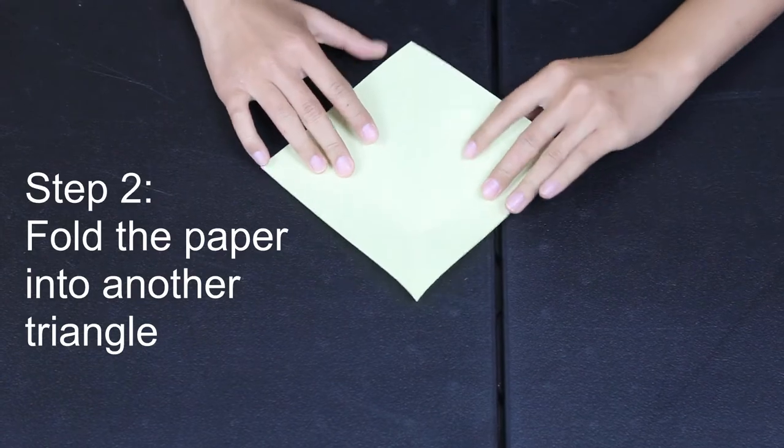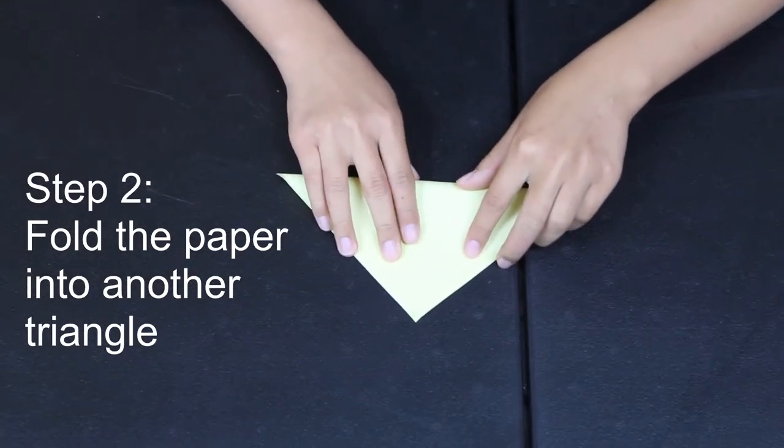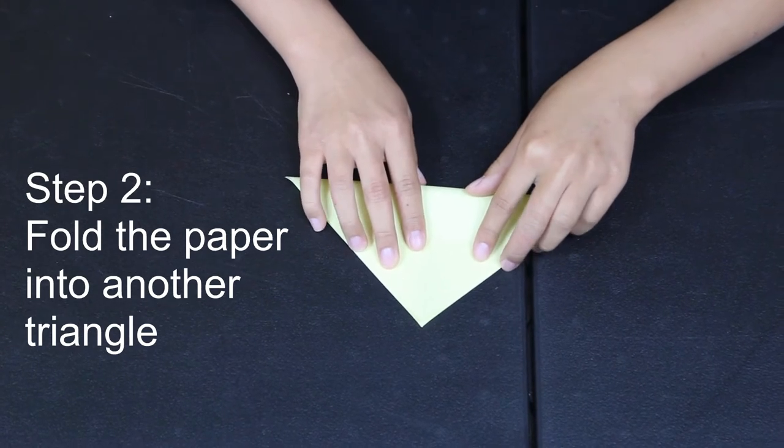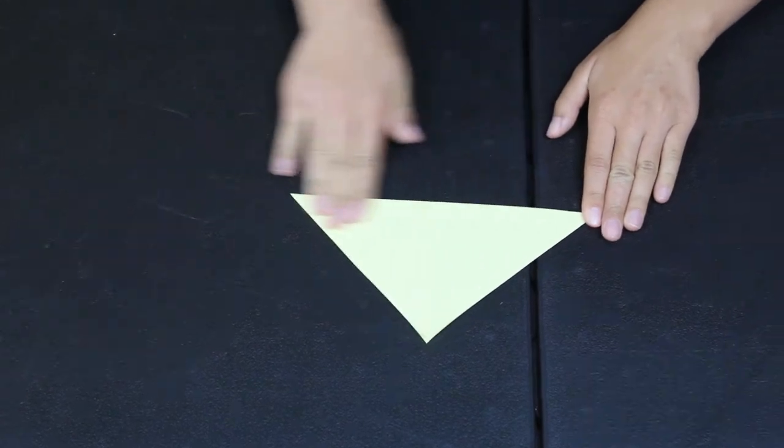We're going to unfold it and fold it the other way to make another triangle. Make sure it's lined up nicely and press down really hard on the edges to make sure it is crisp.